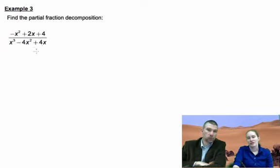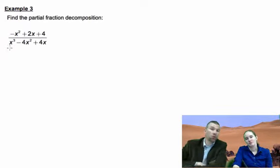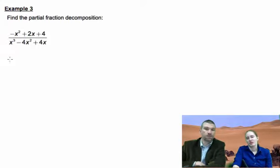Step number one: factor the denominator. First check and make sure the numerator is less degree, and it is—x squared is smaller than x cubed. Second step, we can take an x out of all three of these, so let's do that.